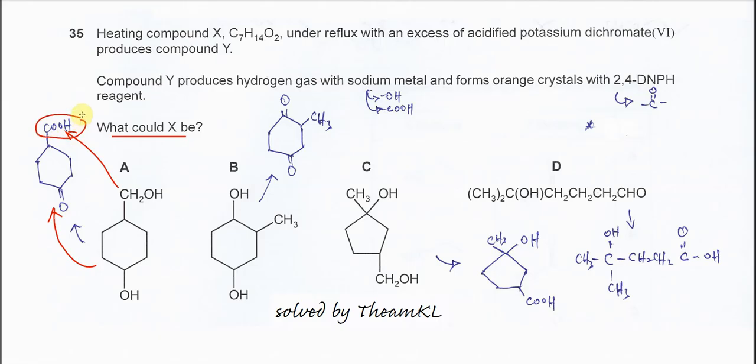So it's going to have either alcohol or COOH. This compound has carboxylic acid group and it has a ketone group which will form the orange precipitate with 2,4-DNPH. So A is the answer.